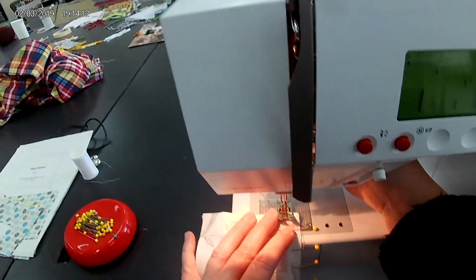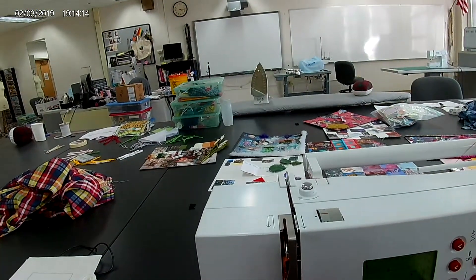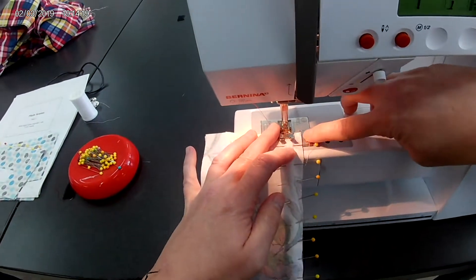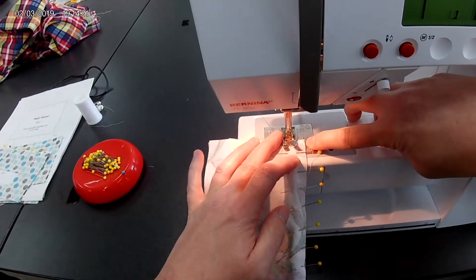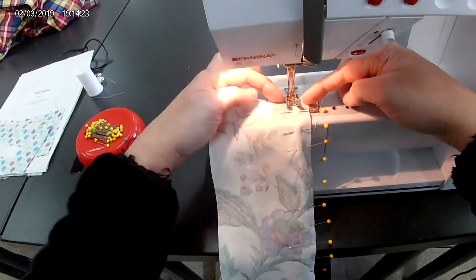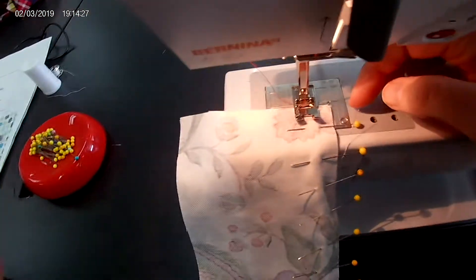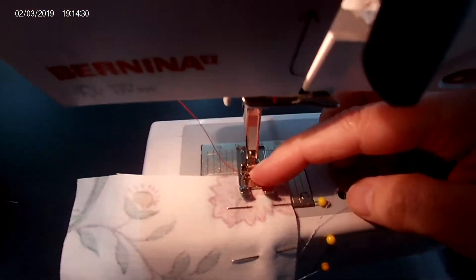I will make sure that my perpendicular edge of the fabric is right against the 5/8 inch line and the parallel edge of the fabric is right along with the oval in the presser foot, right in there.